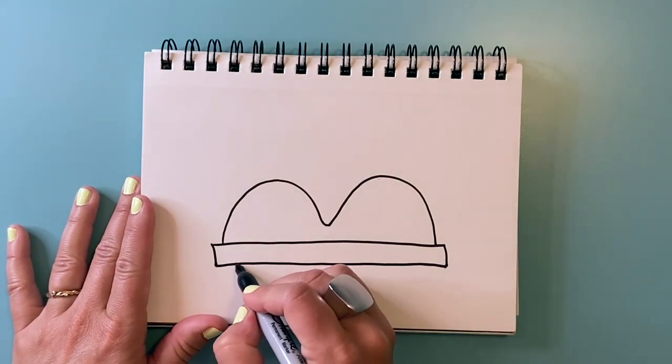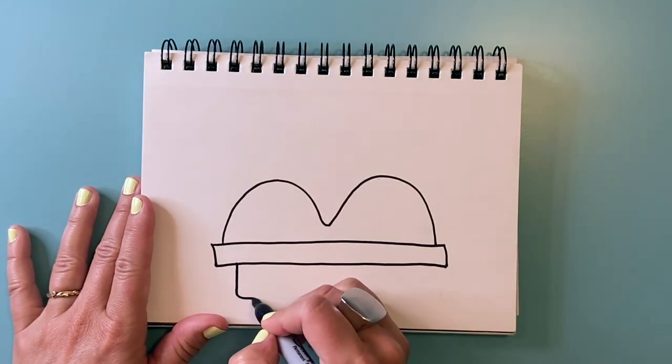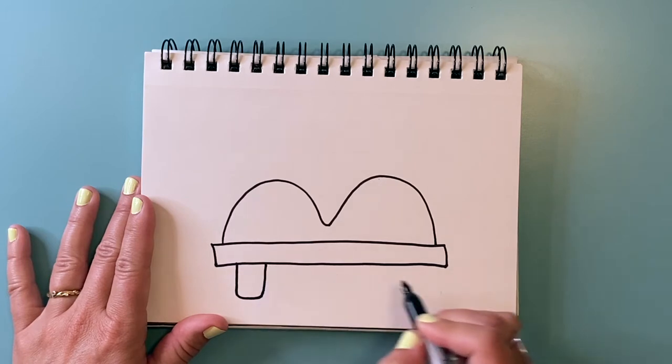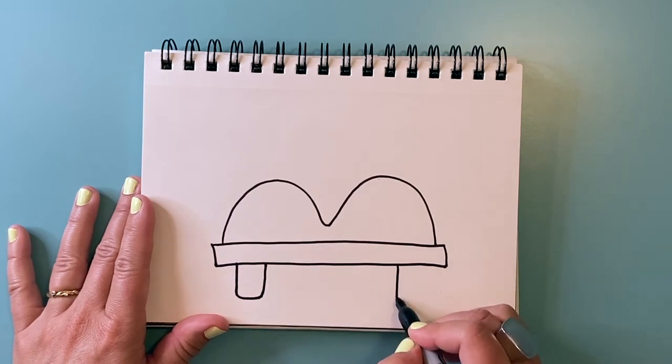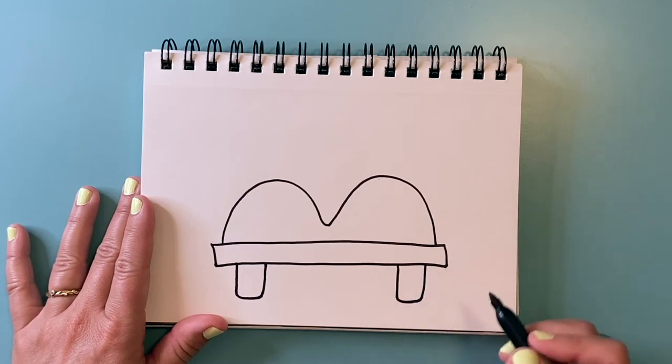And then two wheels. So I'm going to make two rectangles underneath, but I'm gonna kind of curve the bottom a little bit, curve those corners so it looks more like tires.